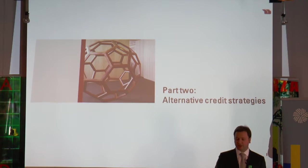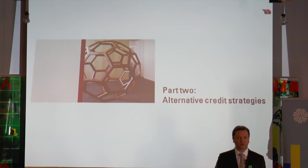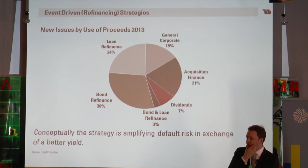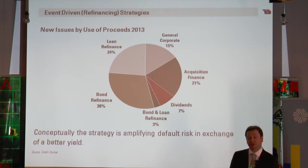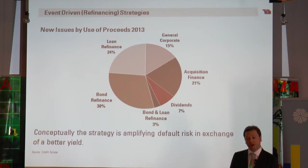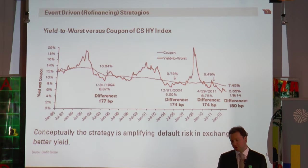Now let's go to the alternative credit strategies. What I'm going to address is how you can target specific segments of the credit market to improve your yield or protect your portfolio. The first strategy is on the refinancing side. It's very interesting that in 2013, 57% of issuance was used for refinancing. There was a lot of issuance, and most of it was used to refinance and roll debt forward. That creates a real opportunity because there is huge demand for debt and credit markets are very open — it's quite easy for a company to issue.